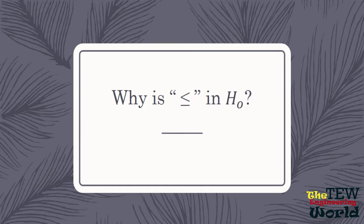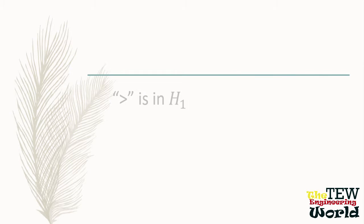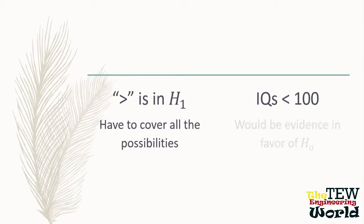Why is 'less than or equal to' in the null hypothesis? It is there because 'greater than' is in the alternative hypothesis and we have to cover all the possibilities. IQs that are less than 100 would be evidence in favor of the null hypothesis.